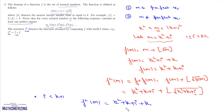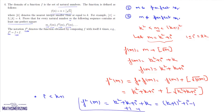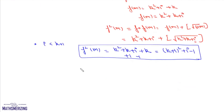Adding and subtracting 1, we can rewrite f²(m) = k² + 2k + 1 + (i − 1) = (k+1)² + (i−1). So f²(m) = (k+1)² + (i−1).